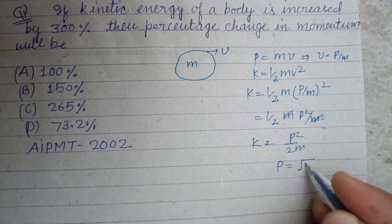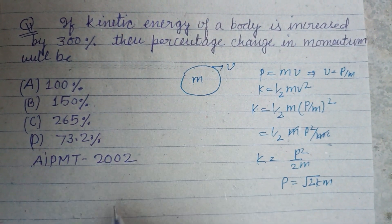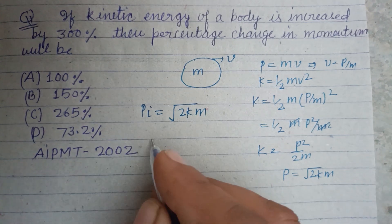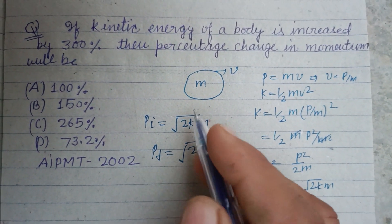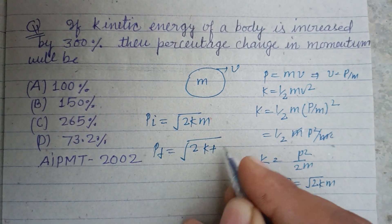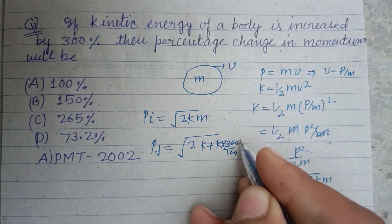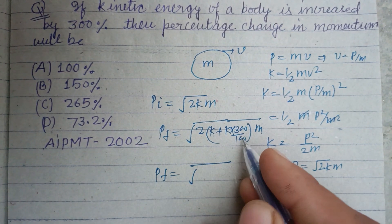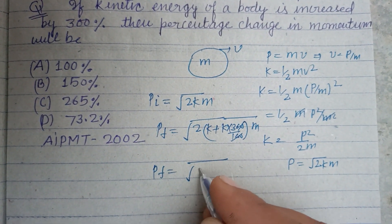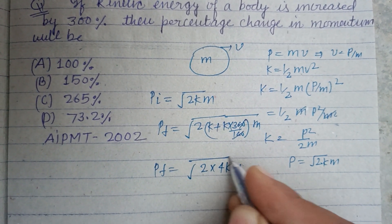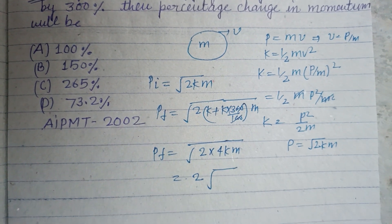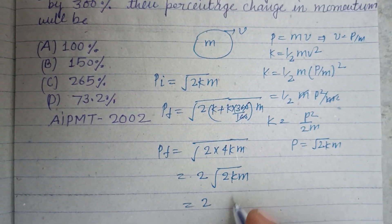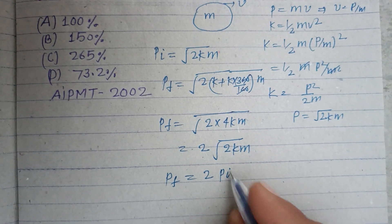So the relation is P = √(2KM). Initially, P_initial = √(2KM). When kinetic energy is increased by 300%, the new kinetic energy is K + K×(300/100) = 4K. Therefore, P_final = √(2 × 4K × M) = √(8KM) = 2×√(2KM) = 2 × P_initial.